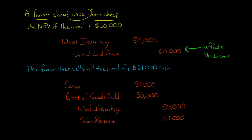So the only difference here is that it's not that easy to know what the cost of that wool was. And so in this specific case, this type of company, this farmer, could actually put the wool on the balance sheet at net realizable value instead of cost.